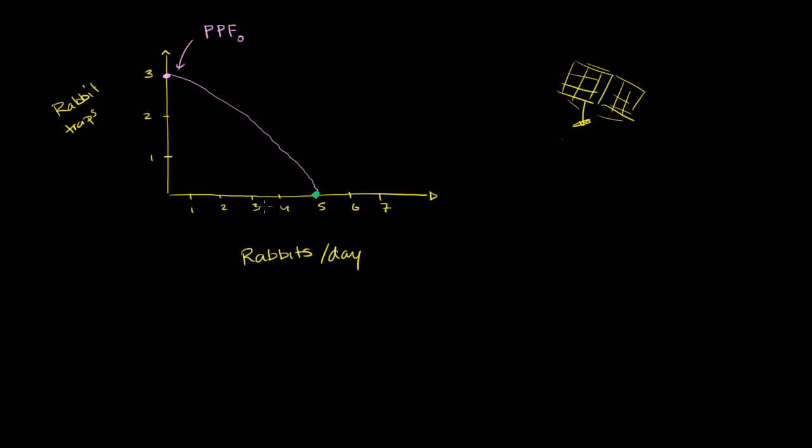But what happens if, instead, he decides that he does want to build some rabbit traps? So he decreases the number of rabbits a day to four, and that allows him to make one rabbit trap per day. So he wants to hang out in this scenario. So every day that goes by, on average, he's going to make four rabbits. And he's going to build a rabbit trap.